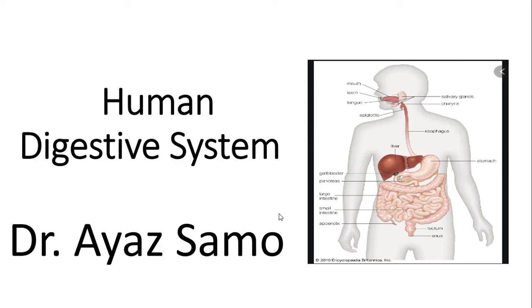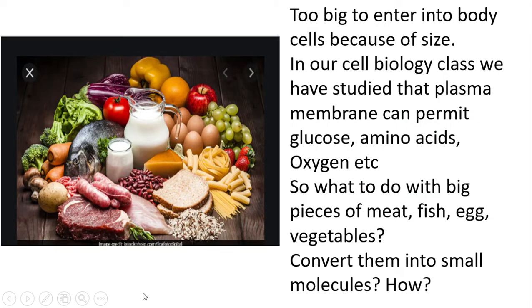Hello everybody, this is Dr. Ayaz Samo and today we would be discussing an overview of the human digestive system. The human digestive system is one of the essential systems in our body. You might eat pizza, sandwich, burger, chicken, meat, steak, french fries, fried fish, eggs, pastry, dessert, or dairy products. Do you prefer Italian spaghetti or Chinese noodles? I like all of them.